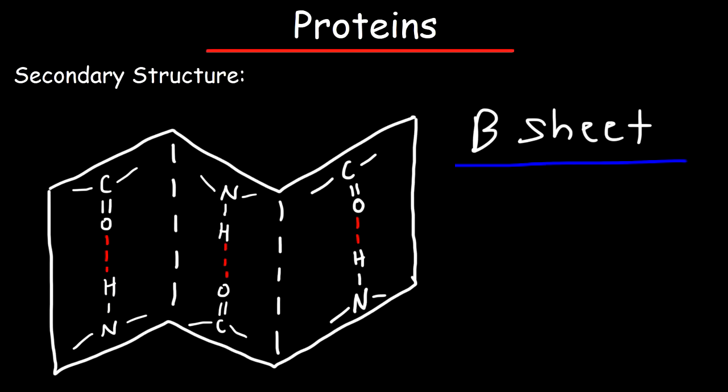Now here is a visual illustration of the beta pleated sheet. Just like the alpha helix it too is stabilized by hydrogen bonds between the carbonyl group of one amino acid and the NH group of another amino acid.